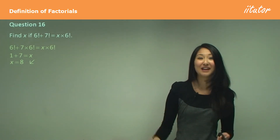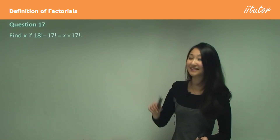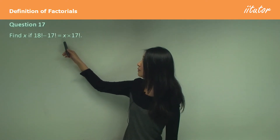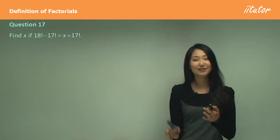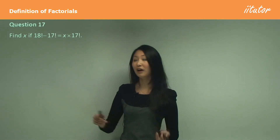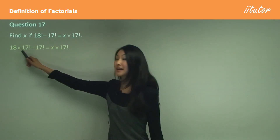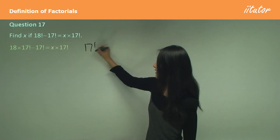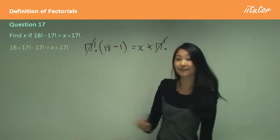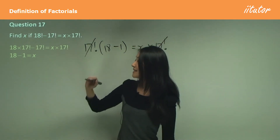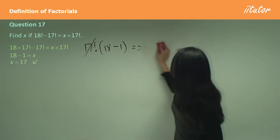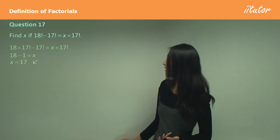You can see that factorials work just like ordinary numbers when solving for x, factorizing, or simplifying. Question 17: find x if 18 factorial minus 17 factorial equals x times 17 factorial. Again, factorize out 17 factorial. Change 18 factorial to 18 times 17 factorial, then factorize: 17 factorial times (18 − 1) equals x times 17 factorial. Cancel the 17 factorials, so x equals 17.